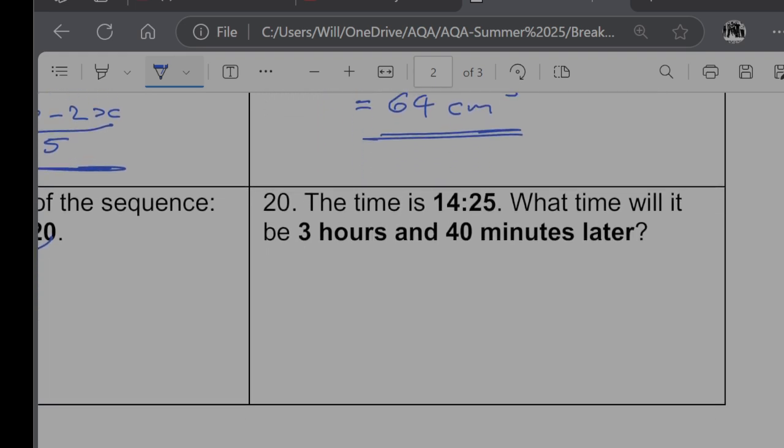And finally, question 20. The time is 14:25. What time will it be three hours and 40 minutes later? So if I'm doing a time like this on a non-calc paper, what I will tend to do is I will chunk it. So if I just add on 40 minutes to start with, that time would become, well, there are 60 minutes in an hour, so it would be five past the next hour. So that's going to be 15:05. And then I will add my three hours. So 15 plus three is going to be 18:05.